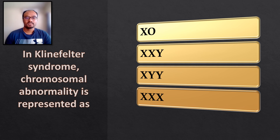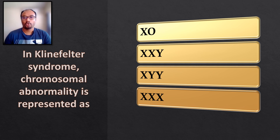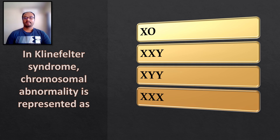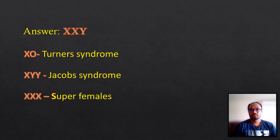The next question: in Klinefelter's syndrome, the chromosomal abnormality is represented as — and the options are XO, XXY, XYY, and triple X. The correct answer is XXY. The chromosomal combination of XO is called Turner syndrome.